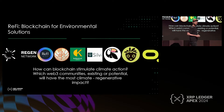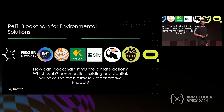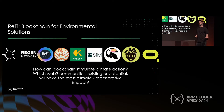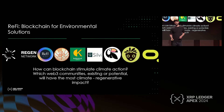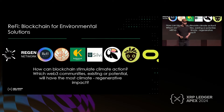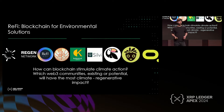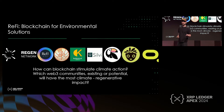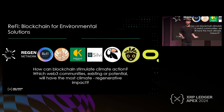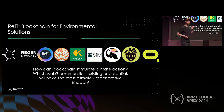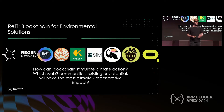Arguably, the holy grail is a solution where financial outcomes are reflected in natural outcomes. To get there, it can be boiled down to two questions: How can blockchain stimulate climate action? And which Web3 communities, existing or potential, will have the most climate and regenerative impact and thus be best positioned to create value in a token?